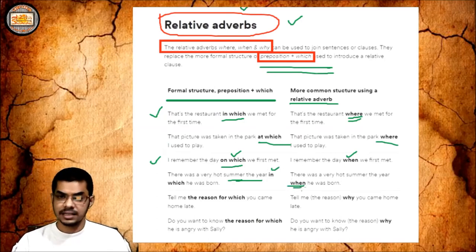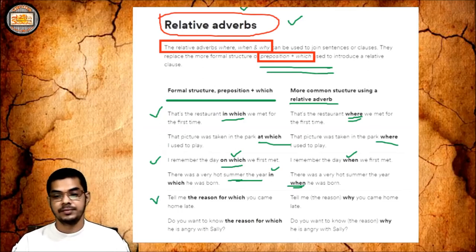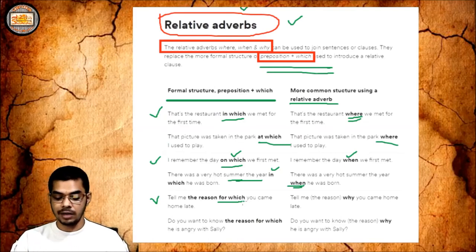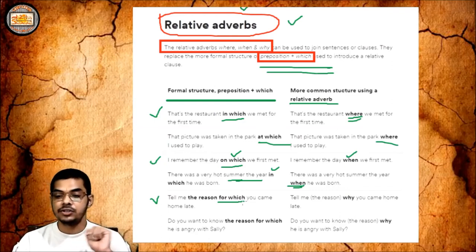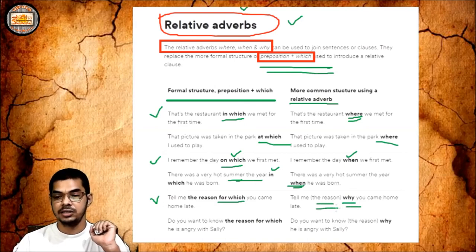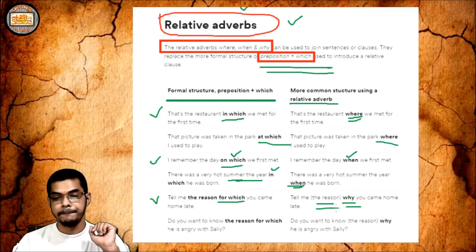Now look at this sentence: 'Tell me the reason for which you came home late.' Here, for which is the preposition plus which construction. Because the antecedent is reason, and reason clearly calls for why, we replace for which with why: 'Tell me the reason why you came home late.' You may or may not write reason explicitly — it's up to you — but when reason is present, why is essential.